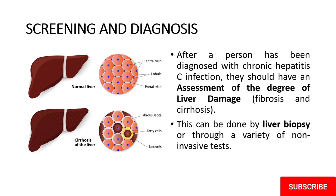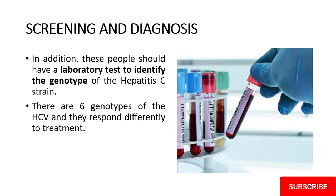After a person has been diagnosed with chronic hepatitis C virus infection, they should have an assessment of the degree of liver damage — fibrosis and cirrhosis. This can be done by liver biopsy or through a variety of non-invasive tests. In addition, these people should have a laboratory test to identify the genotype of the hepatitis C strain, as there are six genotypes and they respond differently to treatment.